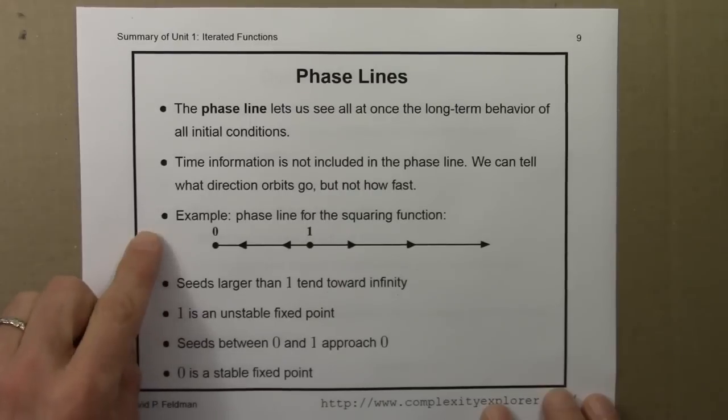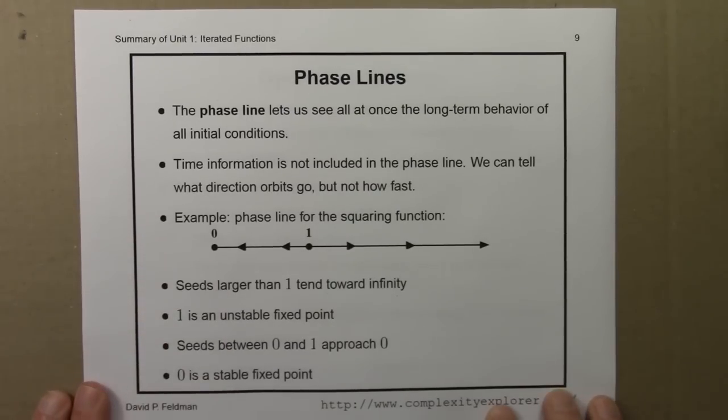An example, here's the phase line for the squaring function. This phase line shows that seeds larger than 1 tend towards infinity. 1 is an unstable fixed point. Seeds between 0 and 1 approach 0, and 0 is a stable fixed point.